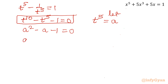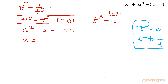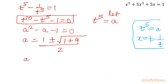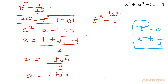Let us apply the quadratic formula. Recall our two substitutions: first, x equals t minus 1 over t; second, t power 5 equals A. Applying the quadratic formula to A squared minus A minus 1 equals 0 gives A equal to 1 plus or minus square root of 1 plus 4, all over 2. So A equals 1 plus or minus square root 5, divided by 2.